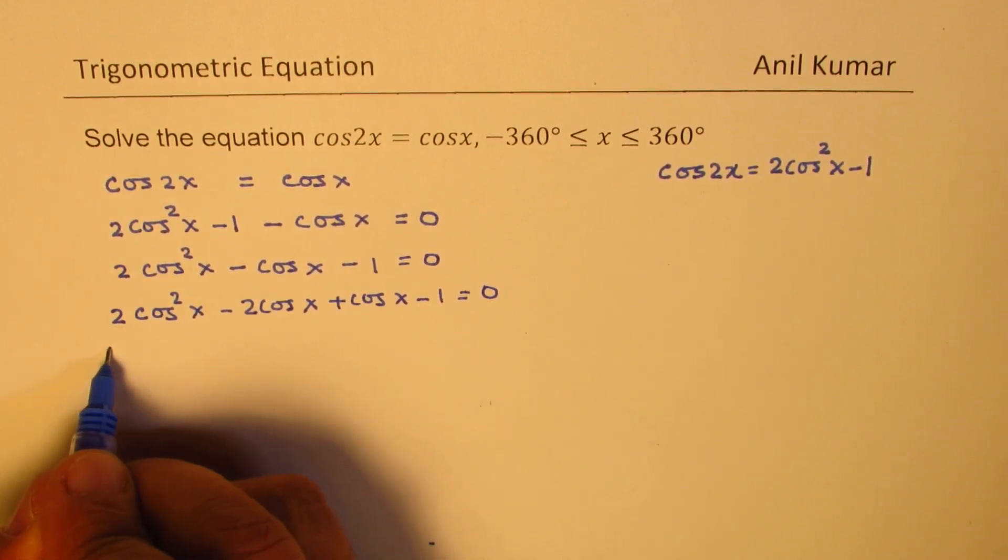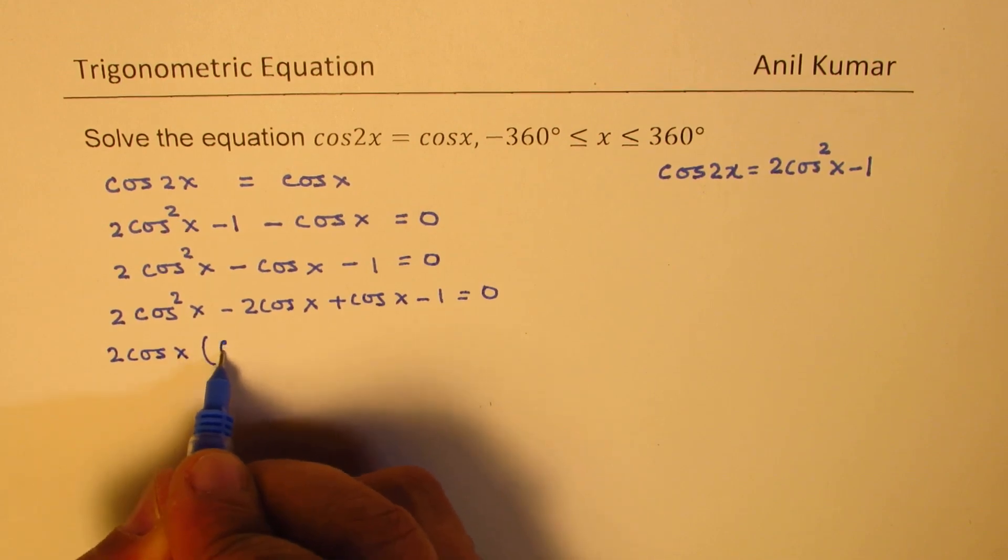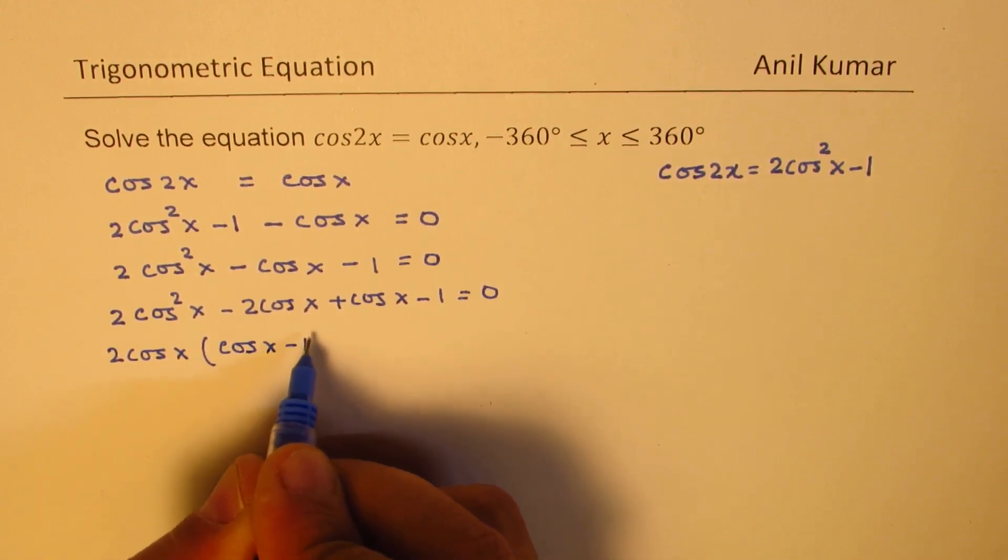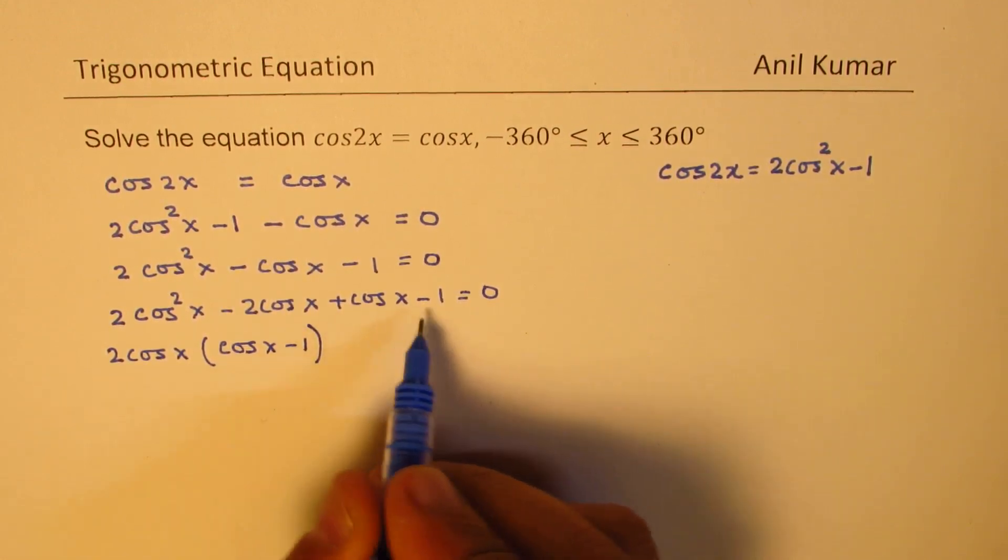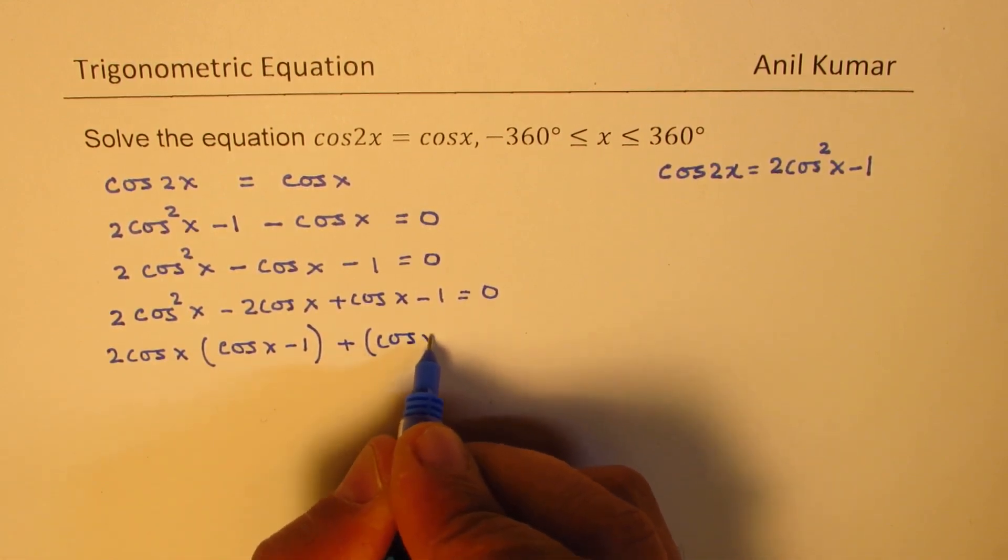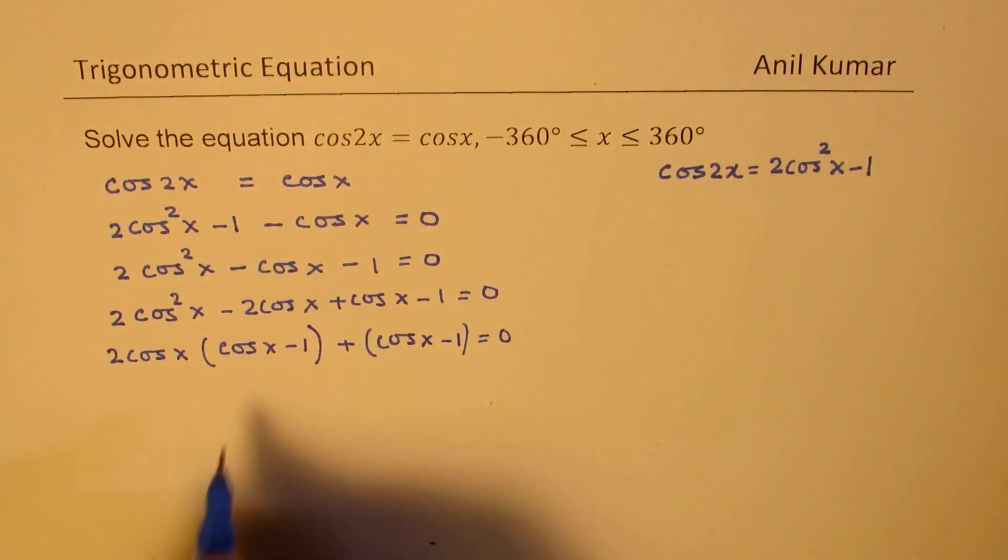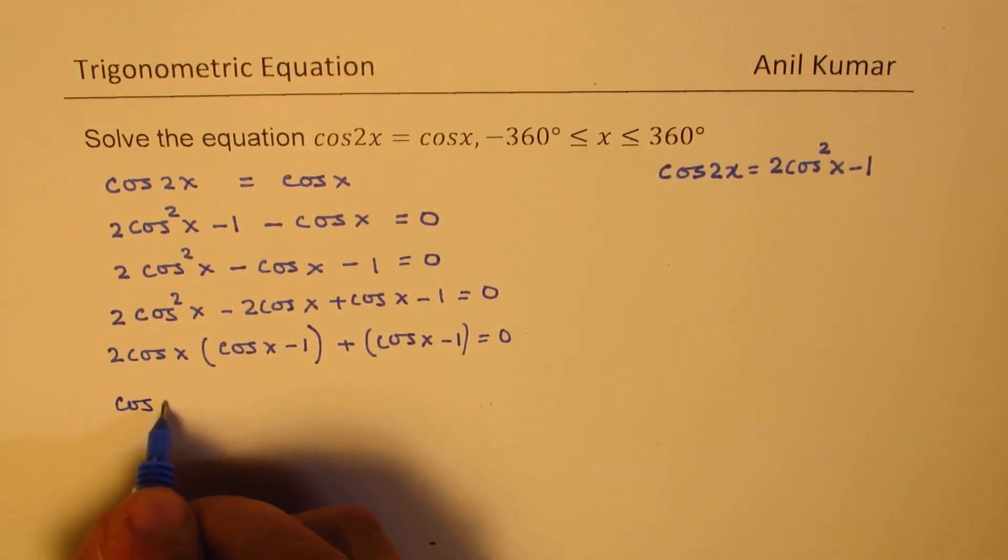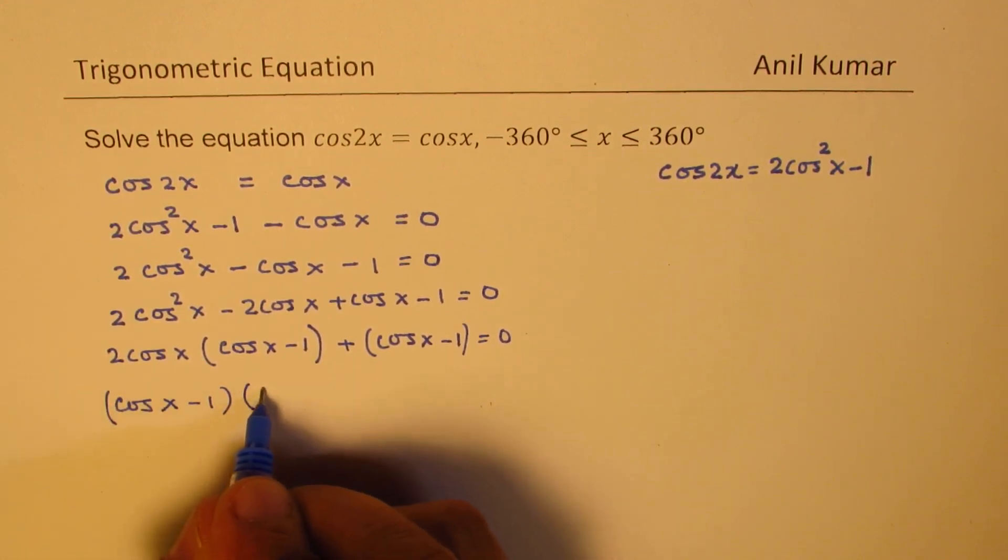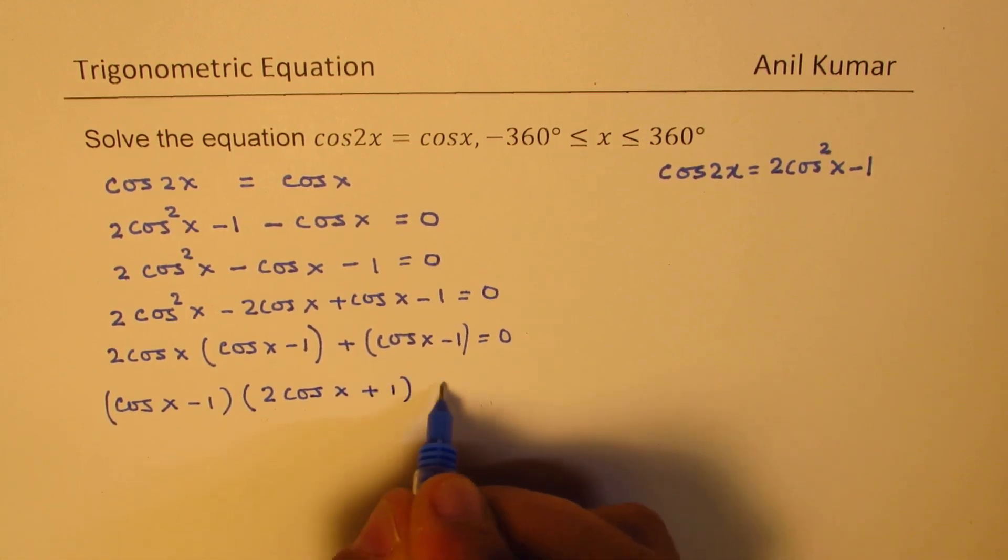Taking 2 cos x common in the first two terms, we get cos x minus 1. Here we can take plus, we just have a term cos x minus 1. So 1 is a common factor here. Now cos x minus 1 becomes a common factor, giving us 2 cos x plus 1 as the other factor.